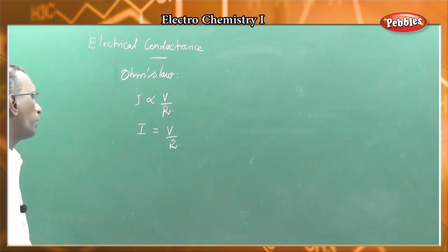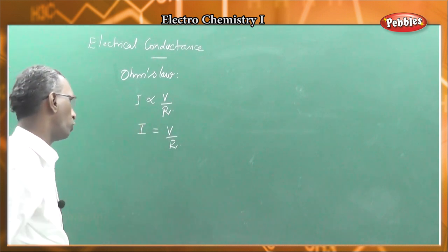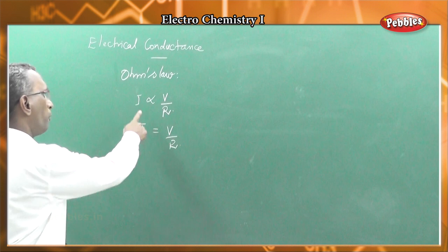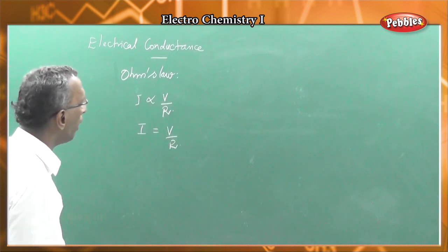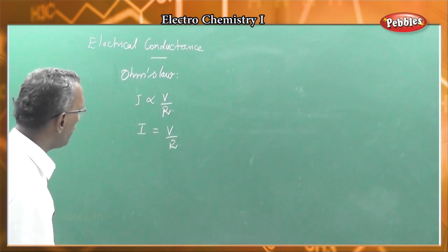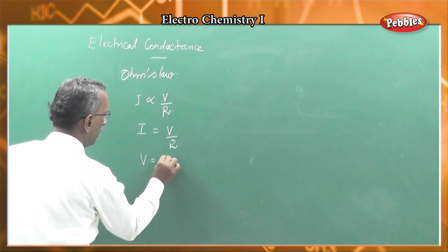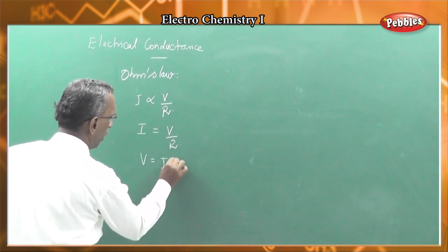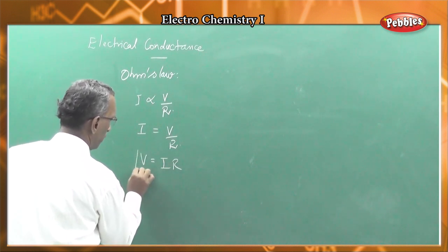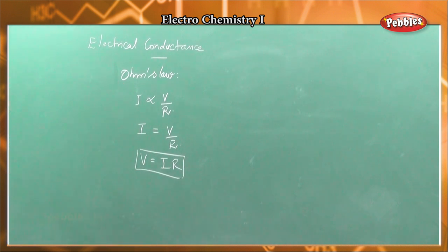The proportionality gives us I proportional to V by R, so I equal to V by R. If we cross multiply, V equal to IR. That is the mathematical statement of Ohm's law.